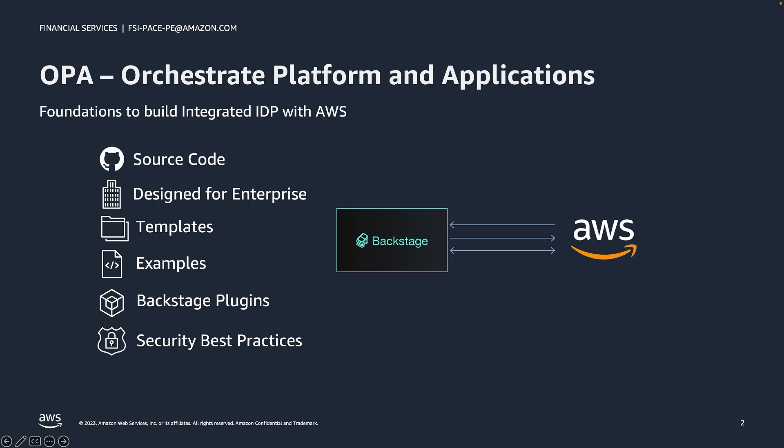As described in previous videos, OPA on AWS is an open-source solution to help customers build their internal developer platform and integrate with AWS. The OPA solution provides the infrastructure as code to run Backstage in AWS, Backstage plugins, a GitLab source code management reference implementation, and an example repository containing a variety of sample templates to create environments and applications in AWS. Let's dive into more details about where and how security and access control is enforced in the solution.